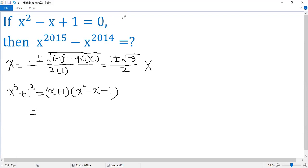We know by the given condition, the second factor equals 0. So we get 0. That means x³ + 1 equals 0. So x³ equals negative 1.